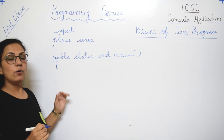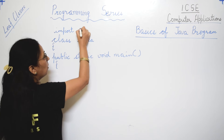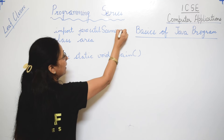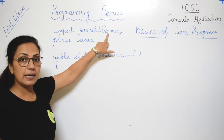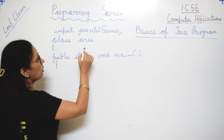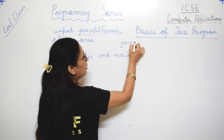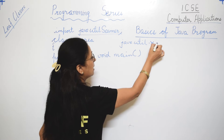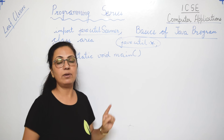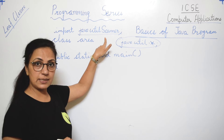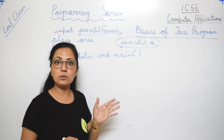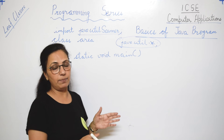Now we will do the same program but using an input statement instead of assignment. The first statement of your program will be the import statement: import java.util.Scanner — note that 'S' of Scanner is capital. Scanner is the class name and it is in the java.util package. You may also write java.util.* which means all classes of the util package are available to this program.